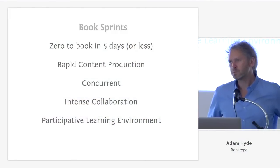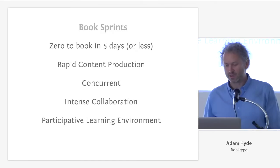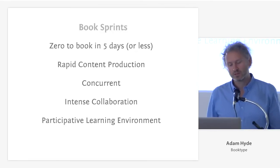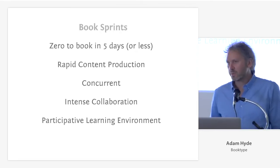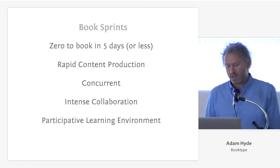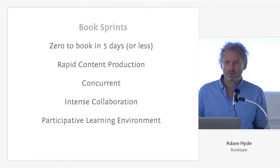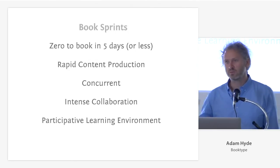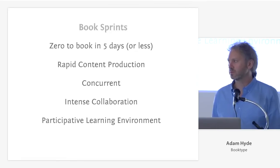BookSprints in brief is a rapid production methodology. It brings together a group of people — six to twelve people — to work collaboratively, often in the same space. It's very much about concurrent production and real-space interactions, although it can also happen partly or entirely remotely. It's an intensive collaborative process and also a very good participative learning environment. If you have a group of experts in a room they all learn from each other, and if you have a mixture of experts and non-experts it becomes a really fueled participative learning environment.